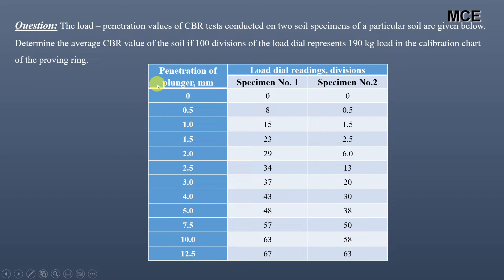The table has three columns: the first is the penetration of the plunger in mm, the second is the load dial reading in divisions for specimen 1, and the third is the load dial reading in divisions for specimen 2. These are dial readings in divisions, so we must first convert them into load values, then draw a graph between penetration and load values to find the CBR value.